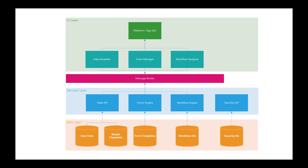At the very bottom we have the data layer and we're going to have a series of databases. Each of these databases will be individual services, and over the top of them we're going to have a service layer. These data APIs or engines will wrap the underlying databases underneath. The point is that the UI should be completely agnostic of the underlying databases, so if we want to change the technology — for example, move from SQL Server to NoSQL — we should just need to change the data services layer and not have to worry about the UI.